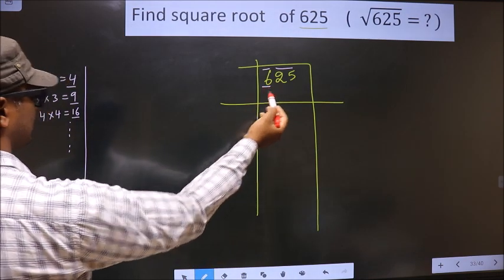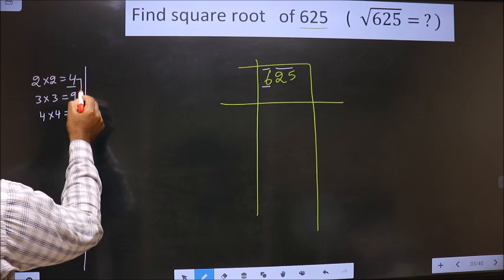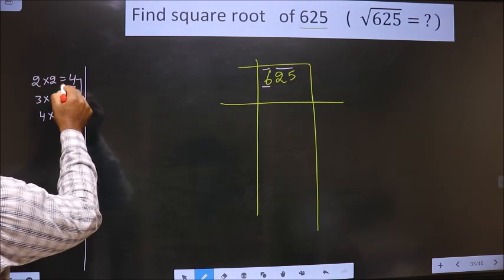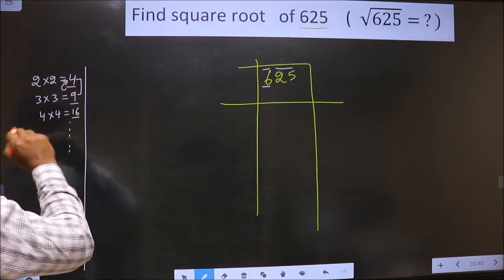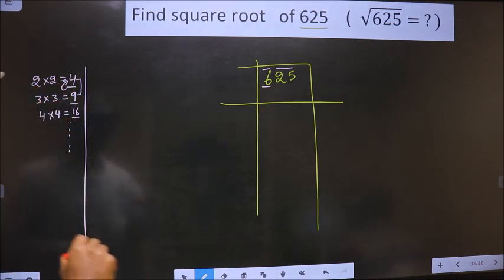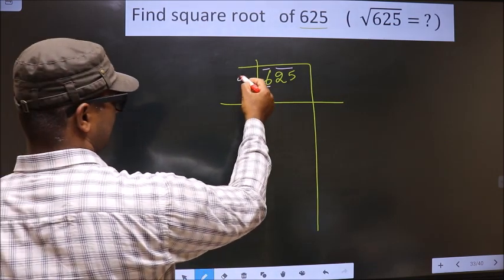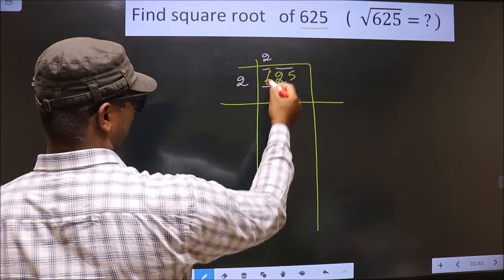Here we have 6. 6 lies between these two numbers. So we should take the smaller number that is 4. 4 is 2 × 2, 4. So we take 2 × 2, 4.